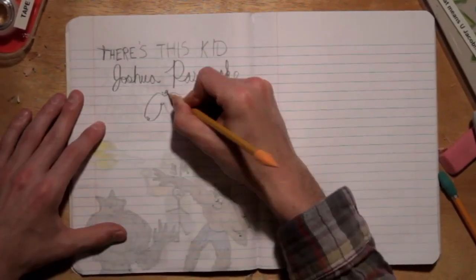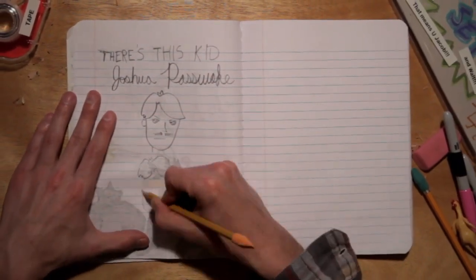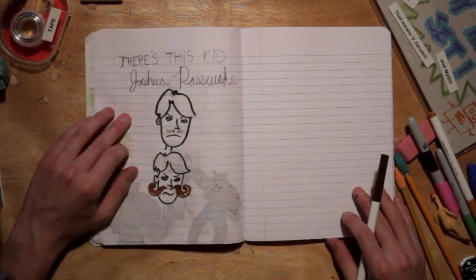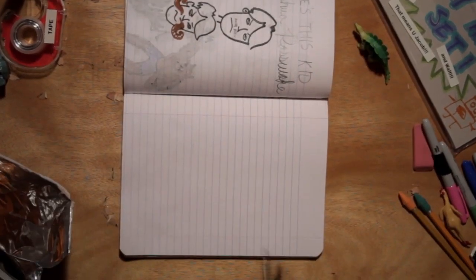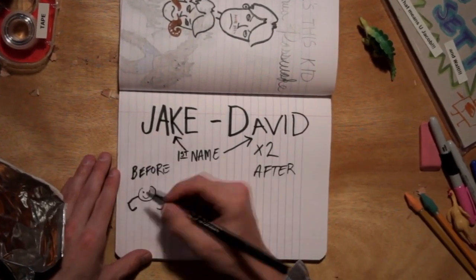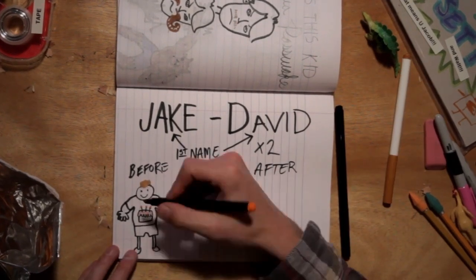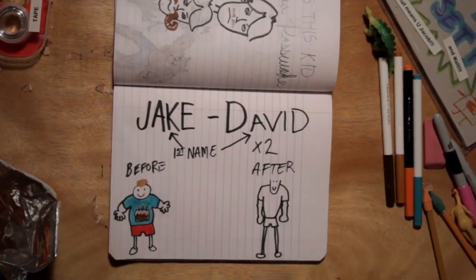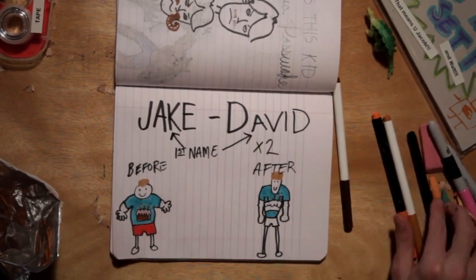There's this kid, Joshua Passwake, who started growing this really cool mustache. I mean it's not very thick, but you can tell it's got potential. Then there's Jake David, the kid with two first names. He was all chubby and short, then overnight he turned all muscular and tall.